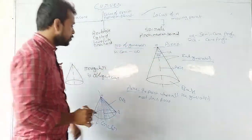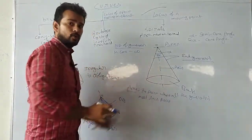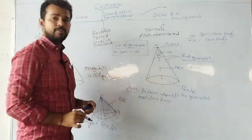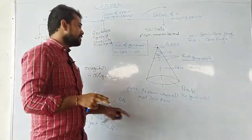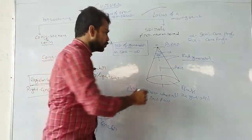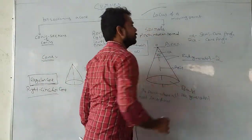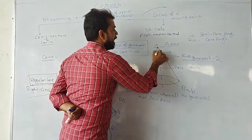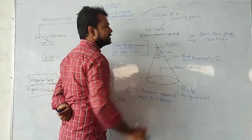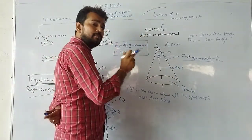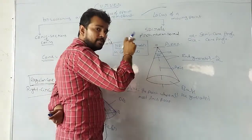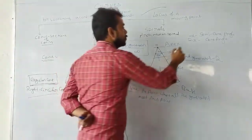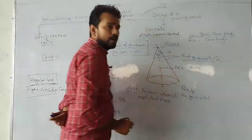The number of generators in a cone is infinity, but only the end generators are identical — there are two of them. The angle made by the axis and one end generator is the semicone angle, and the angle between two end generators is the cone angle, two alpha.